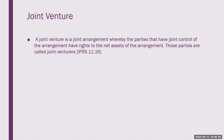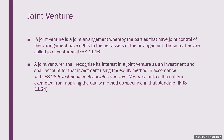These parties are called joint venturers. A joint venturer shall recognize its interest in a joint venture as an investment and shall account for that investment using the equity method in accordance with IAS 28, unless the entity is exempted from applying the equity method as specified in that standard. That's paragraph 24 of IFRS 11.